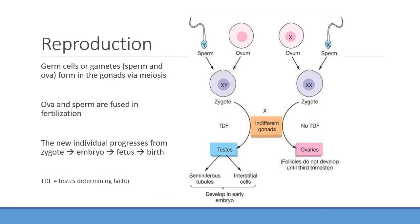So looking at reproduction: everyone gets made from one egg and one sperm. How do we develop those eggs and sperm? That process is meiosis. Remember, we talked about all of that, and we're going to go over it again in just a few minutes.